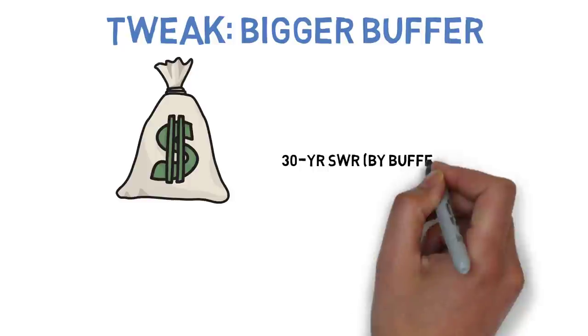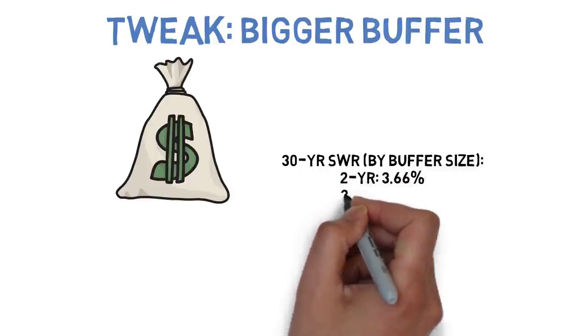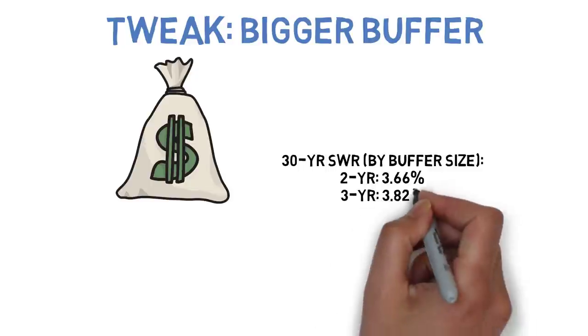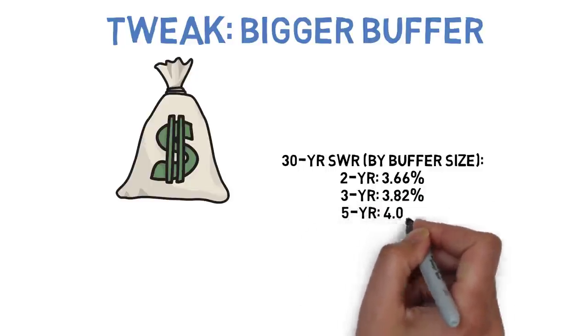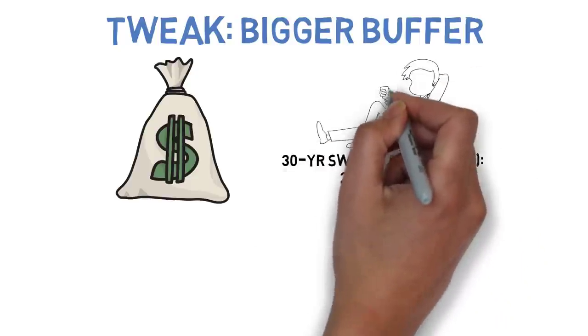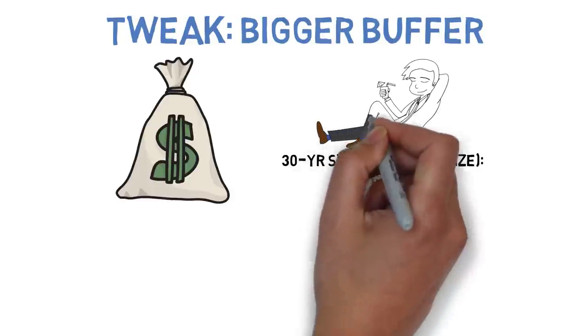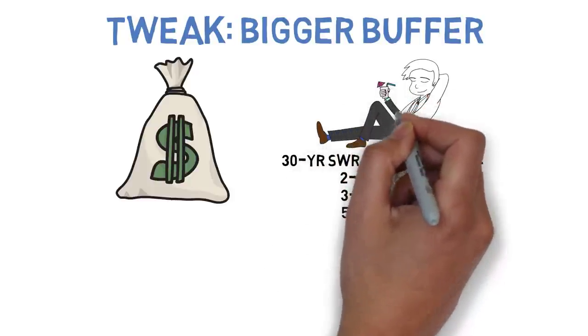With a three-year buffer the 30-year minimum safe withdrawal rate jumps to around 3.82%. However, a five-year buffer only increases that withdrawal rate up to 4.01%. Now, I say only because while that is a noticeable increase it's not punching much above its weight so to speak.